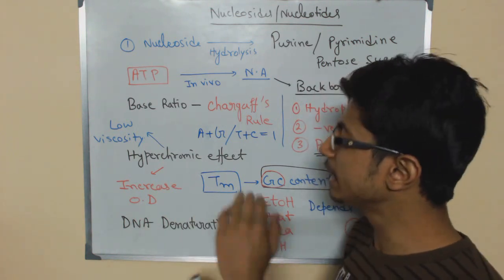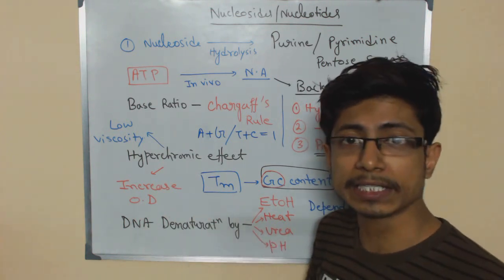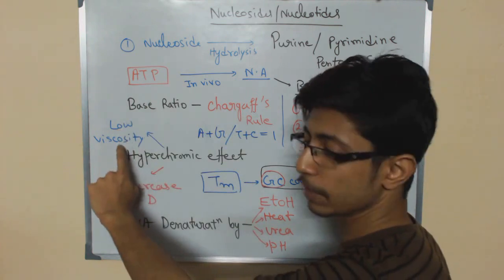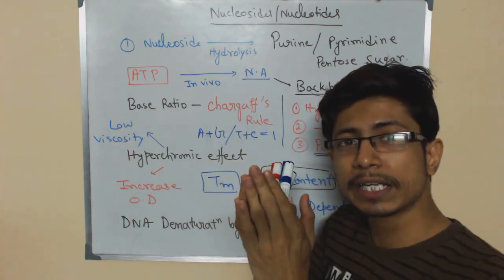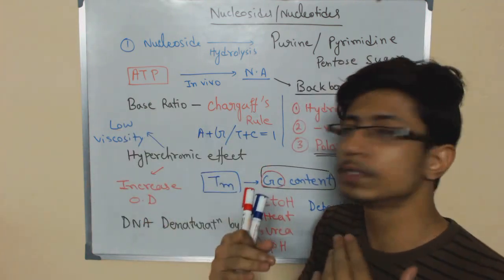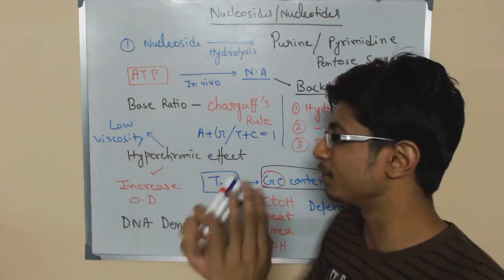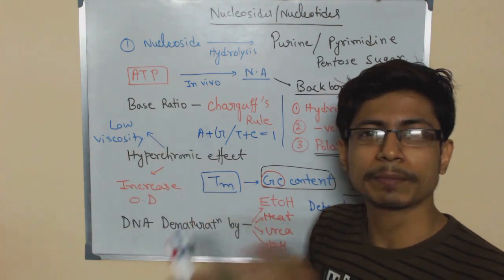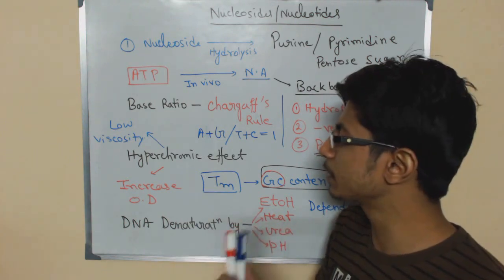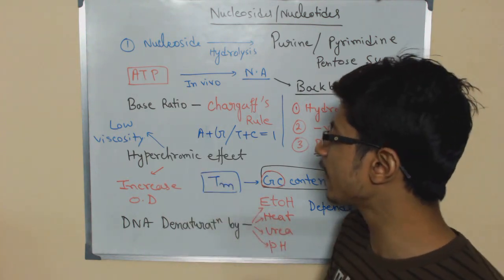And during that process also, as it increases optical density, along with that it decreases viscosity because once the DNA is denatured they're coming out. The viscosity actually gets down in that sense. Previously kind of more viscous, now it's less viscous. So that's called the hyperchromic effect.